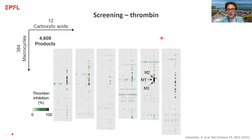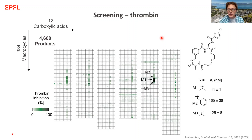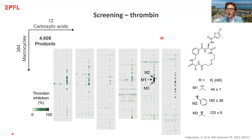What we did was take the three wells with the highest inhibition, re-synthesize and purify those compounds, and confirm that we found some compounds with moderate inhibition against thrombin — around 100 nanomolar.